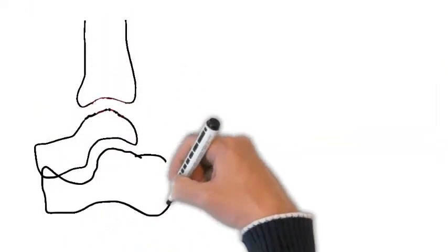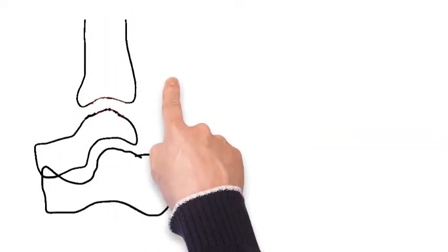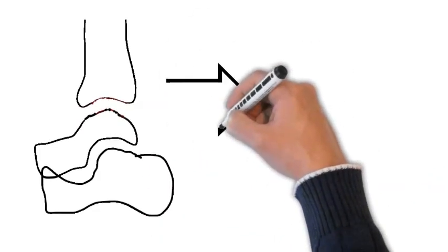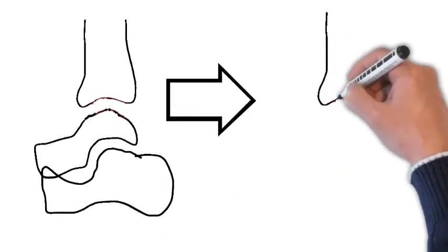Now in a subtalar fusion, different bones are fused, so the talus and the calcaneus, your heel bone and the bone just below your ankle joint known as the talus, are fused.